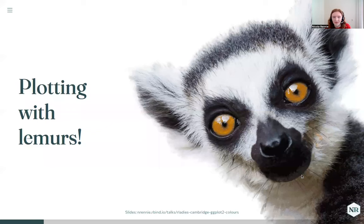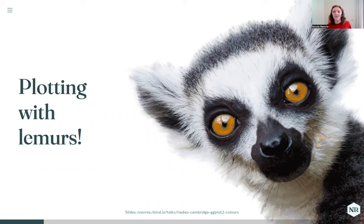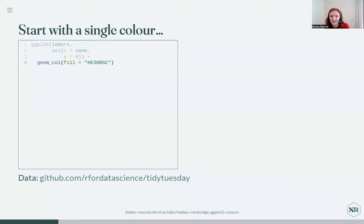If we're going to make some plots, we're going to need some data. I've chosen to work with some data about lemurs from one of the Tidy Tuesday datasets — the choice may or may not be influenced by the fact I was at the zoo yesterday. It's a simple subset with just two columns: the names of some different species, and n, the number of lemurs in that species.